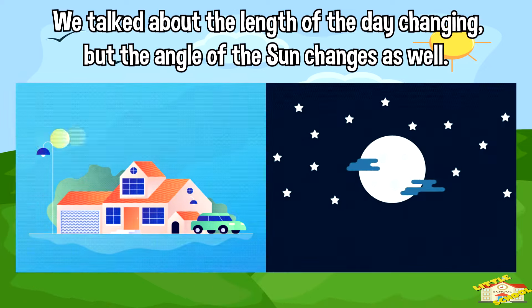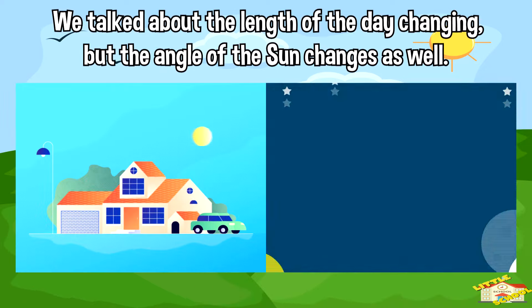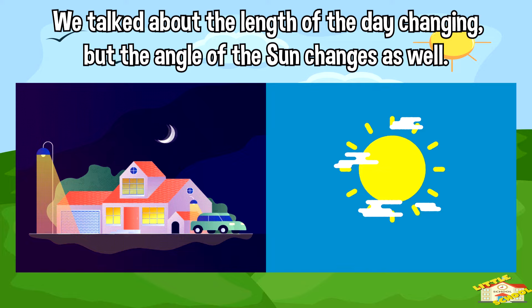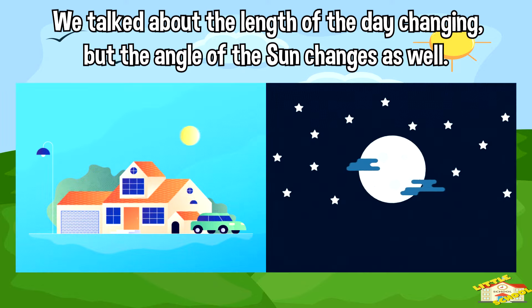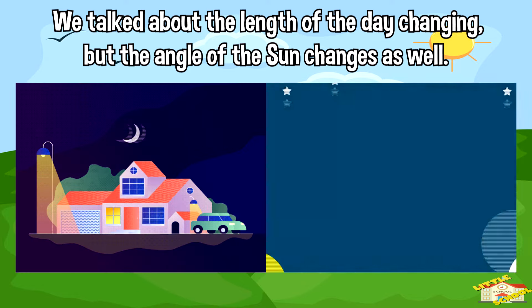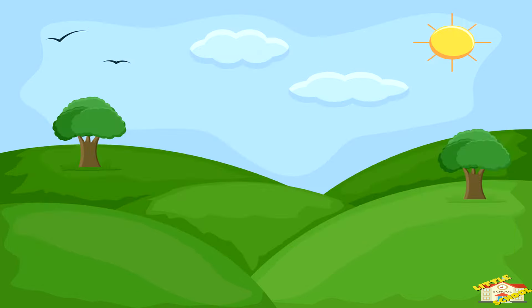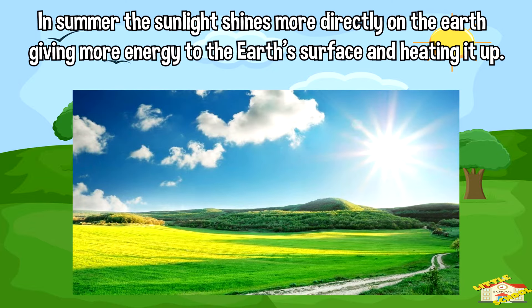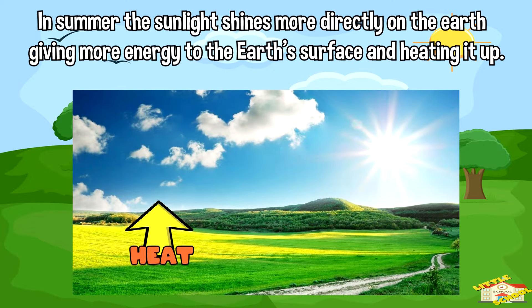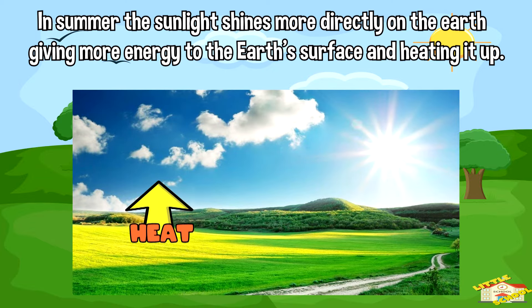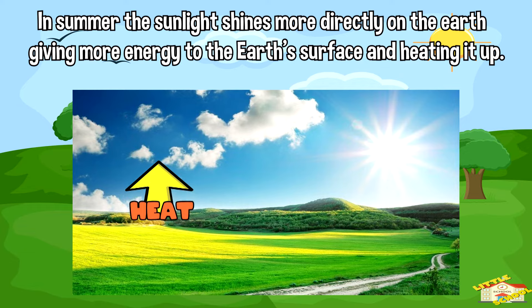We talked about the length of the day changing, but the angle of the Sun changes as well. In summer, the sunlight shines more directly on the earth, giving more energy to the earth's surface and heating it up.